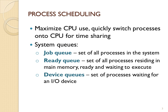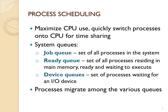Then you have device queues — these are all those processes that are blocked or are in I/O, waiting for a device or waiting for another process. Your processes will migrate between these different queues: they will be ready for the CPU, using the CPU, or waiting to use a device. Switching between them quickly is part of the management of the operating system.